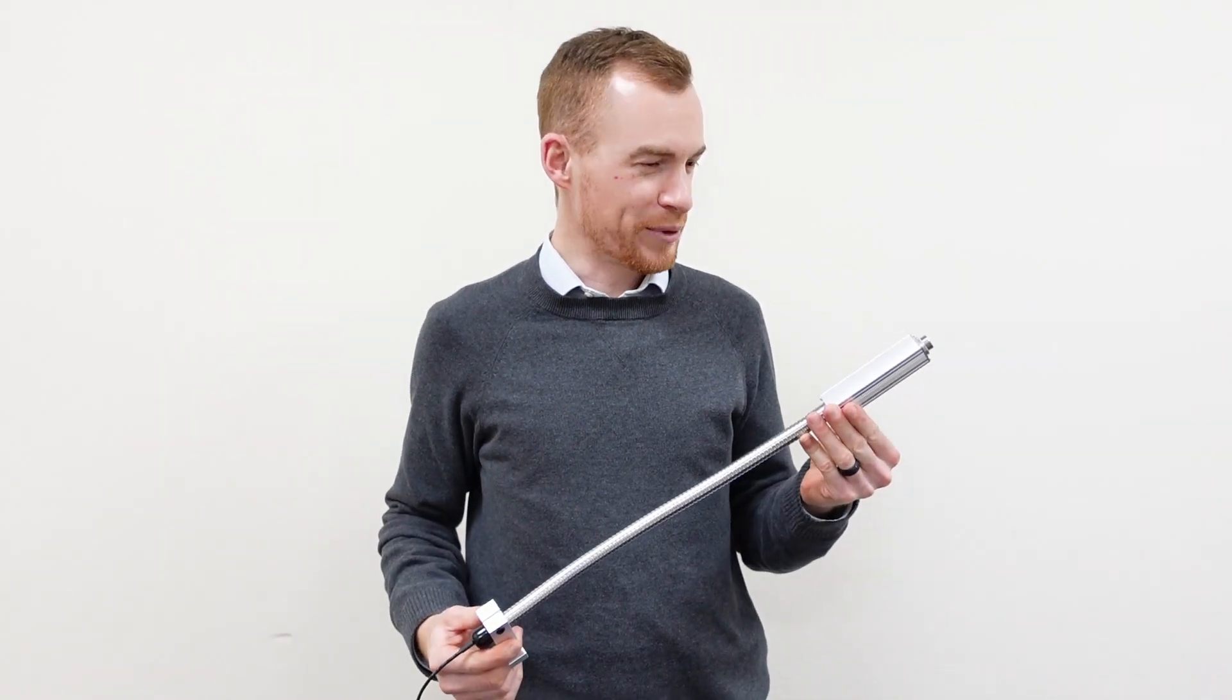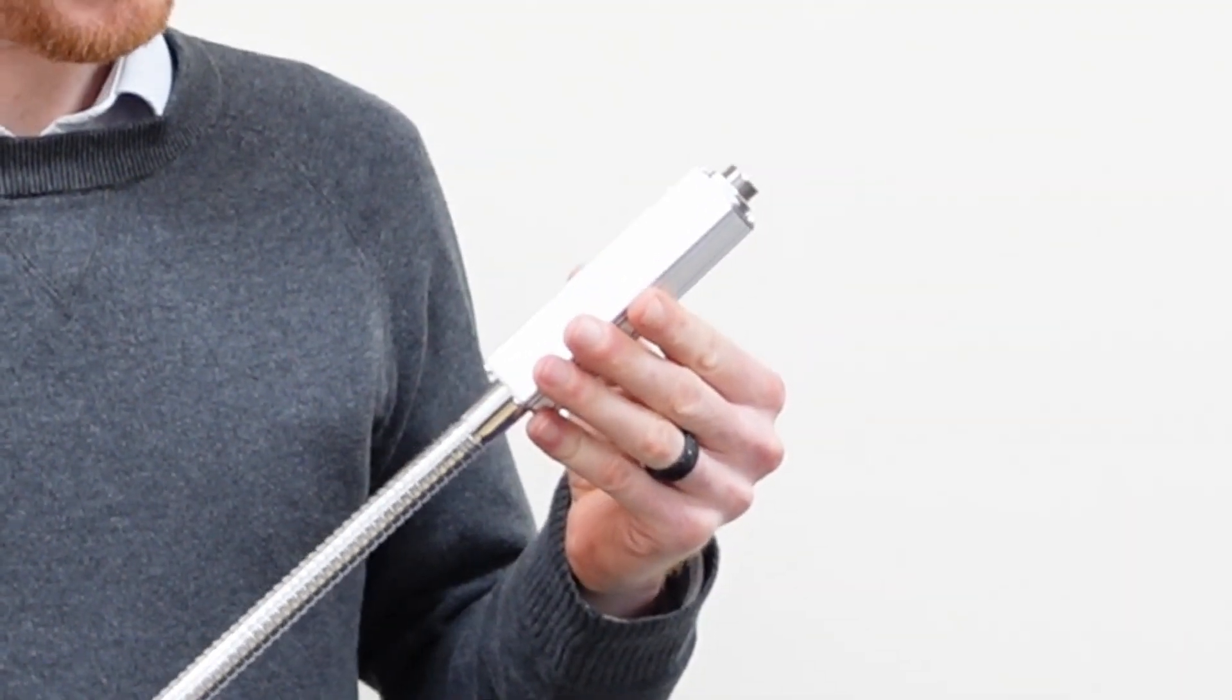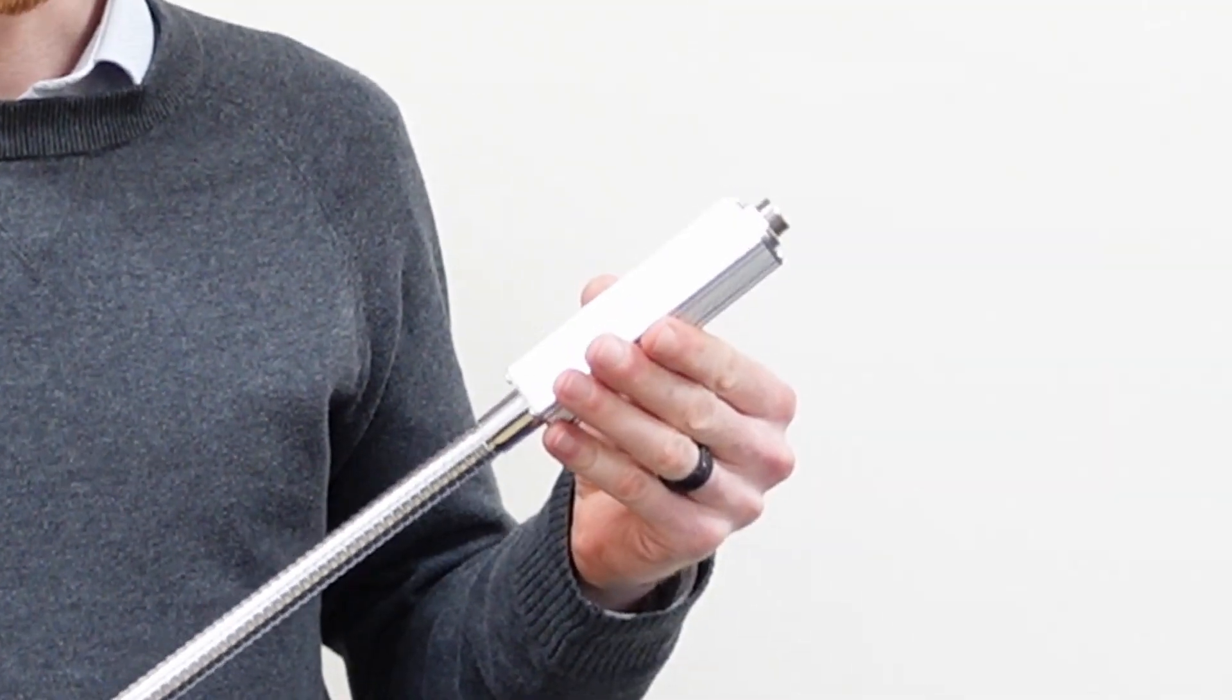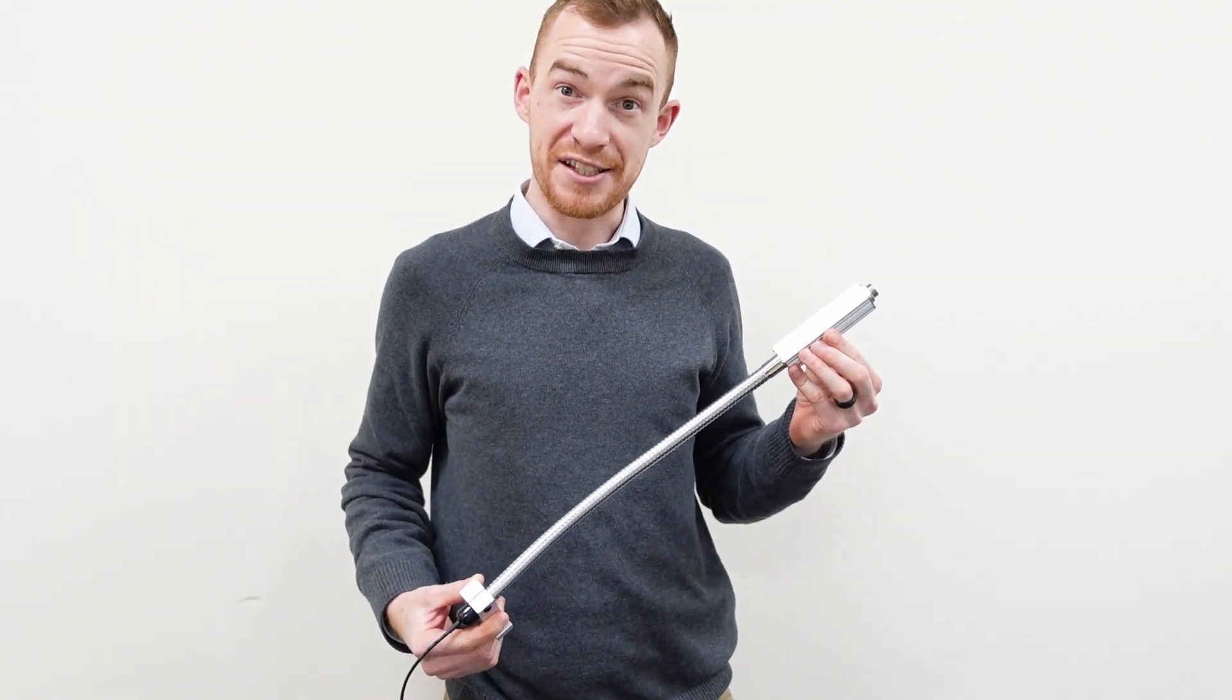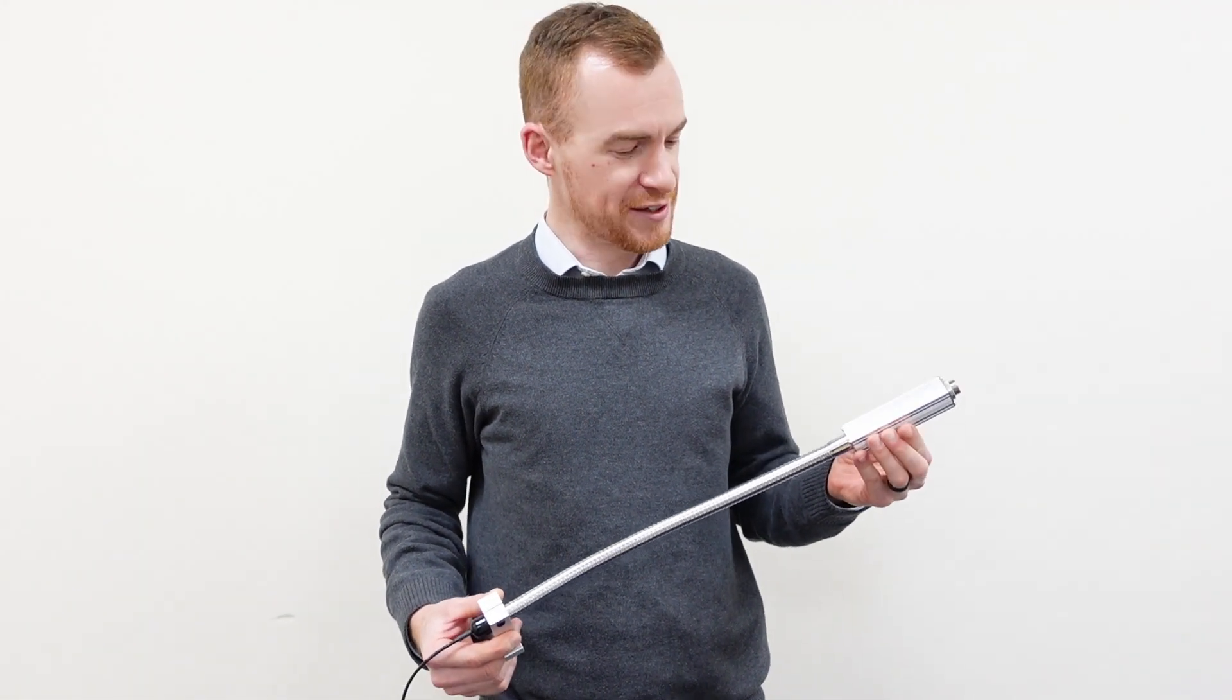This is the new gooseneck mount from Calex Electronics. We've got a pyrocouple sensor here inside the aluminum housing, but it will fit our other 18mm sensors as well, so pyro mini, pyro mini bus, and so on.